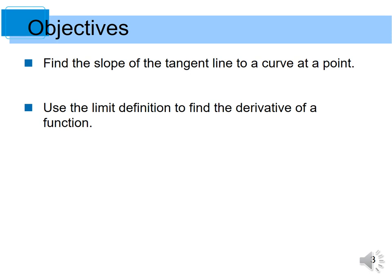We have two objectives in this section: find the slope of the tangent line to a curve at a point, and use the limit definition to find the derivative of a function.